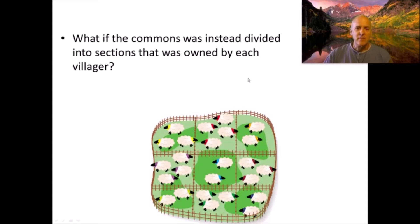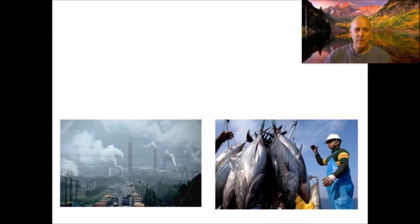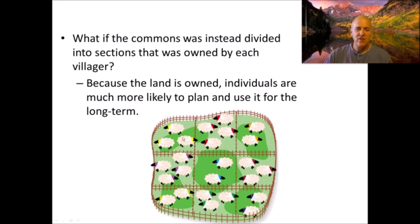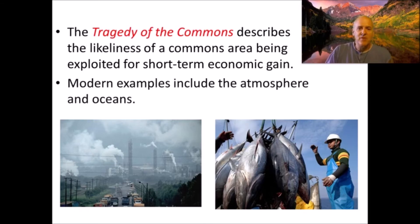Hardin's proposed idea was that if the common area were instead divided into sections owned by each villager, individuals would be much more likely to plan and use their land for the long term. If each plot can only support three sheep, putting two sheep on it means healthier sheep and more grass. Putting four means less grass and less healthy sheep, and over time you won't be able to support any sheep. This describes how commons areas get exploited for short-term economic gain.